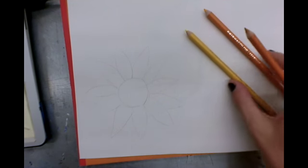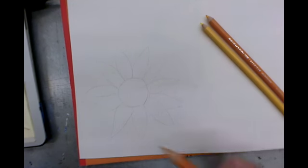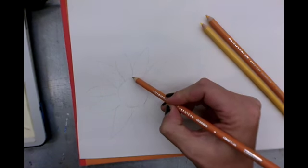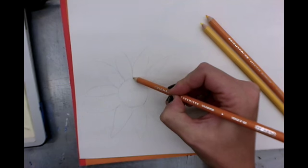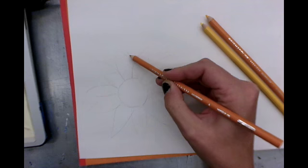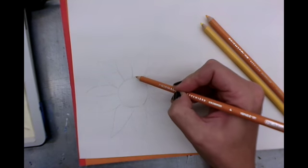So the first thing you want to think about is where your darks might go in a specific image. So for my sunflower I know that usually sunflower petals are darker as they get closer to the center and then sometimes if there's some petals that are behind those would also be a little bit darker.